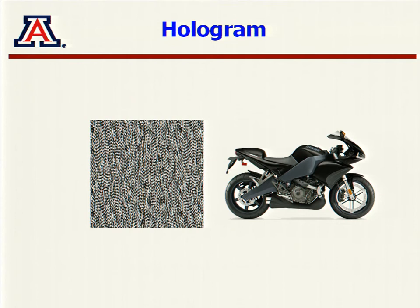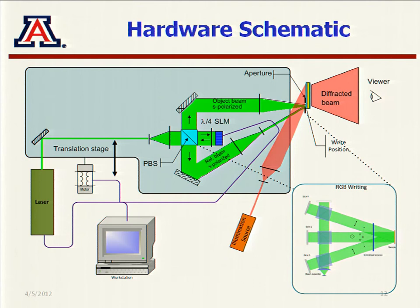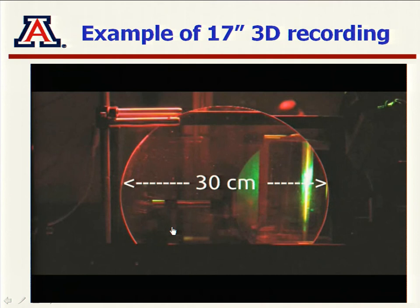The hardware closely follows the schematic: the writing beam goes through the SLM, gets interfered with the reference beam, and you can read it out later with the reading beam. You can also make color by doing angle multiplexing, incorporating three different colors in the process.